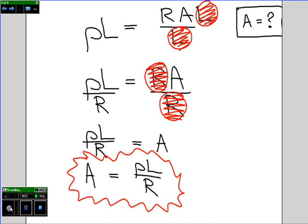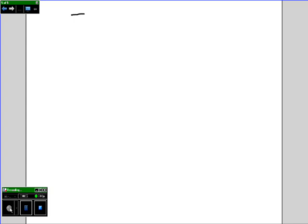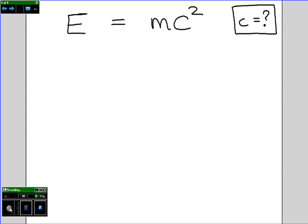Our final example comes from Einstein's most famous equation. E, for energy, equals m c squared. The c in this equation stands for the speed of light. Say we wanted to find c, make c the subject. The first thing to do is to divide both sides of this equation by M.